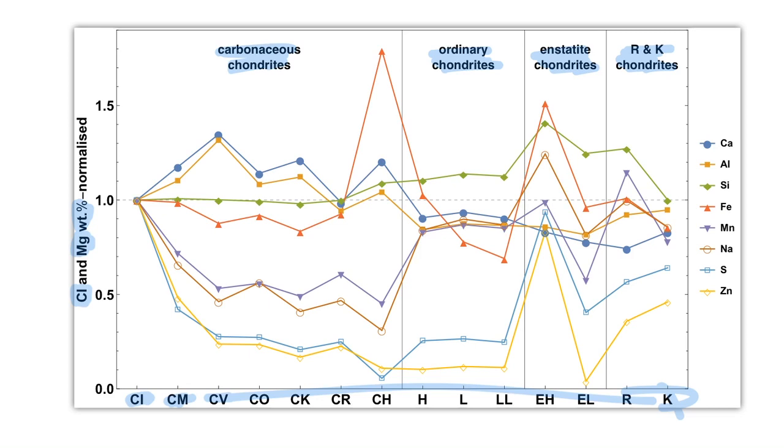The lines then represent elements of various cosmochemical characteristics. The first two here are refractory elements, and these refractory elements are generally enriched in the carbonaceous chondrites, as can be seen here, and slightly depleted in all the other chondrite groups.